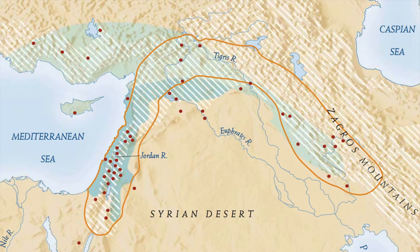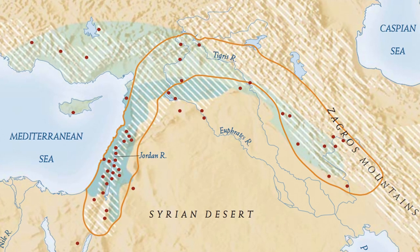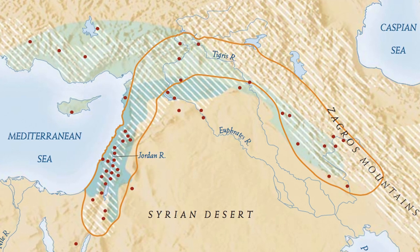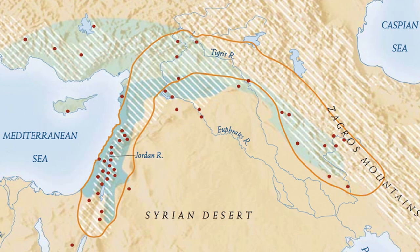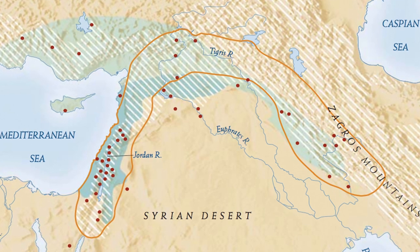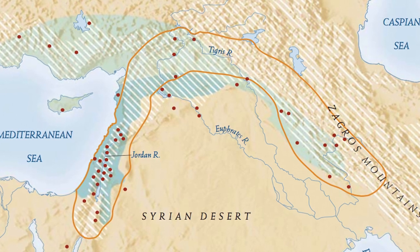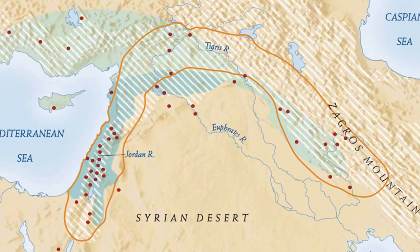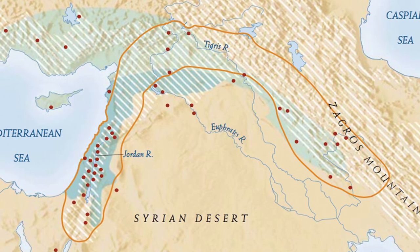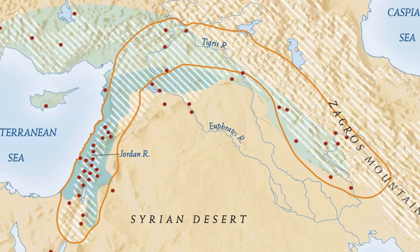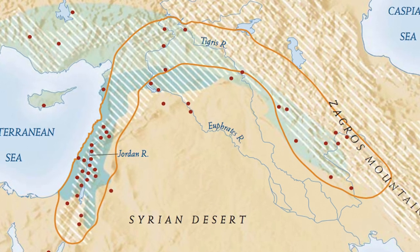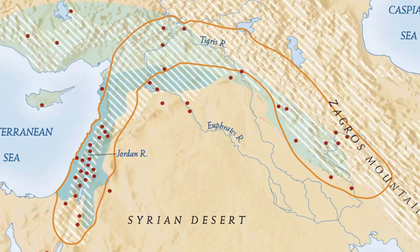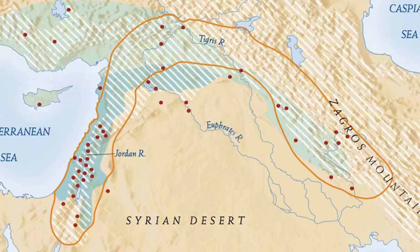Despite these advancements, the settlement pattern in Neolithic Mesopotamia still reflected the necessity for early villagers to inhabit regions with sufficient rainfall for their crops and grazing areas for their livestock. It would only be later that this pattern of settlement would change, primarily in the southern regions.